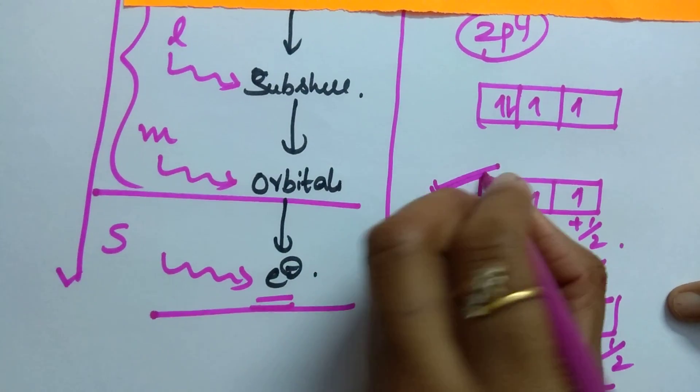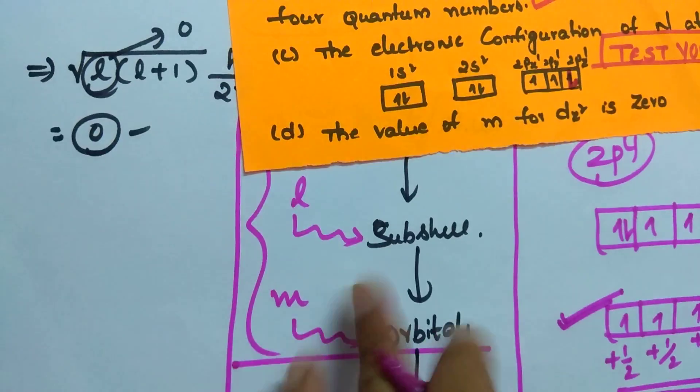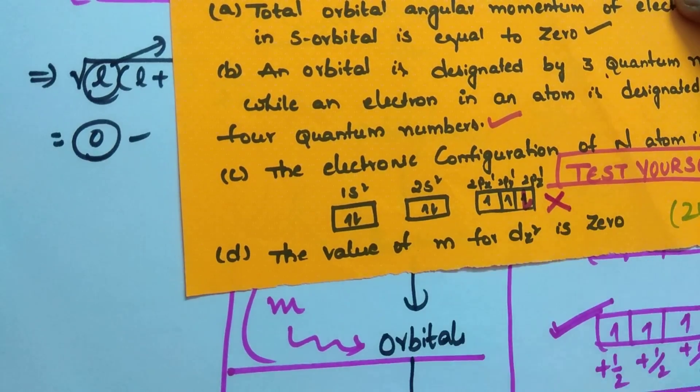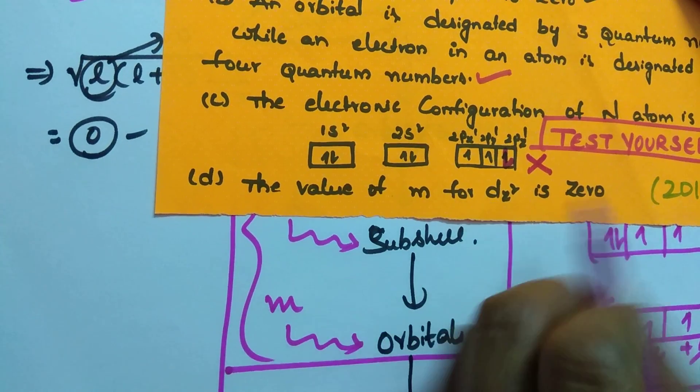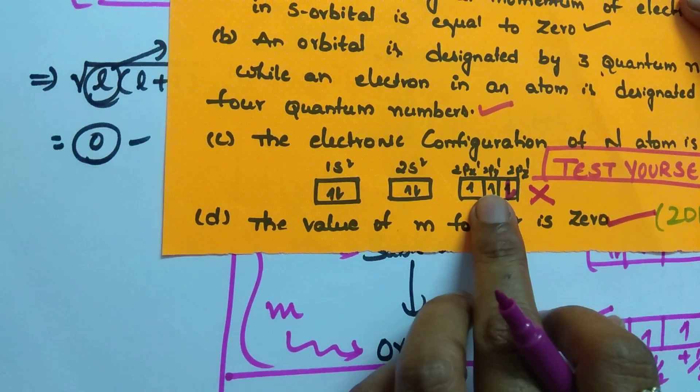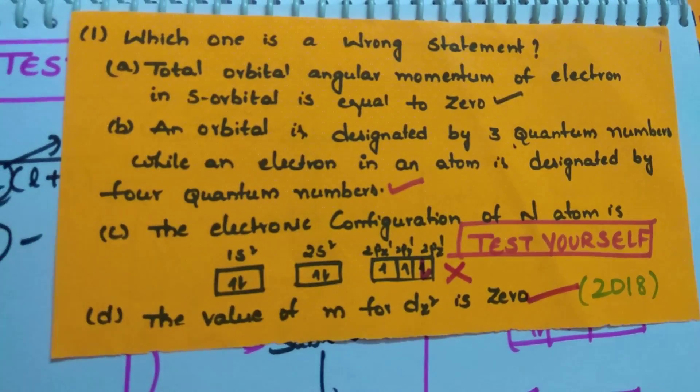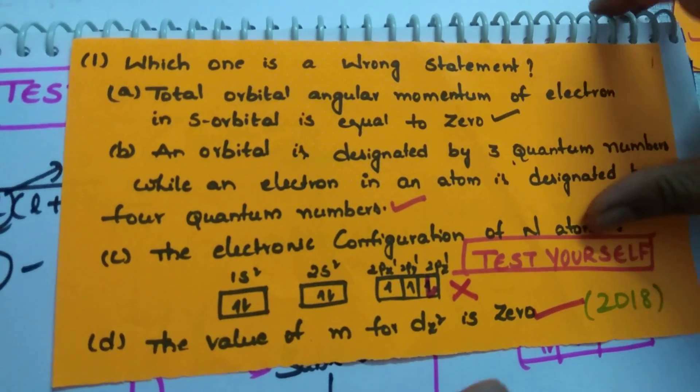So, this is a more stable and correct configuration according to Hund's rule for nitrogen atom. So, this is a wrong statement. And the value of M for dz square is 0. Clear? This is a wrong statement because the spin is less. Always you have to follow which one is having maximum multiplicity.